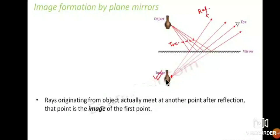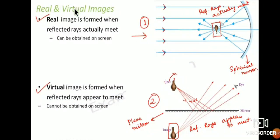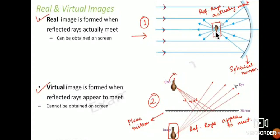The next concept is real and virtual image — these two concepts are very important. A real image is formed when reflected rays actually meet at a point. In a spherical mirror, when the rays bounce off and meet at a point, the image formed is a real image. So real images are formed in spherical mirrors.